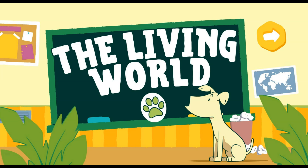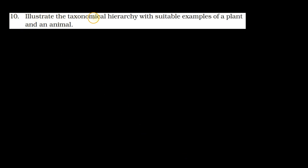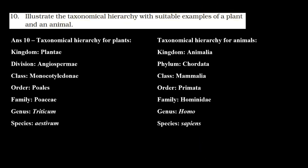Hello everyone. We are discussing the NCERT questions of the chapter 'The Living World'. In today's session we are going to discuss question number 10. The question is: illustrate the taxonomical hierarchy with suitable examples of a plant and an animal. Let's check the answer.